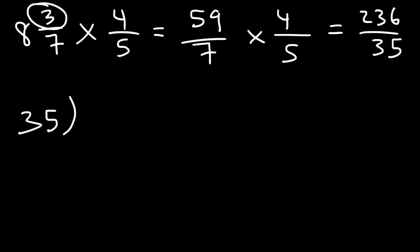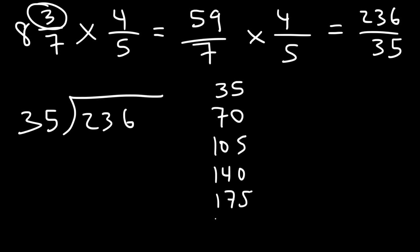So let's use long division. How many times does 35 go into 236? You can keep adding it: 35 times 2 is 70, and if you add 35 to 70 that's 105, and then this is going to be 140, 175, and then 210, and then 245 which is too much. So 35 goes into 236 six times. 35 times 6 is 210, and 236 minus 210 is 26.